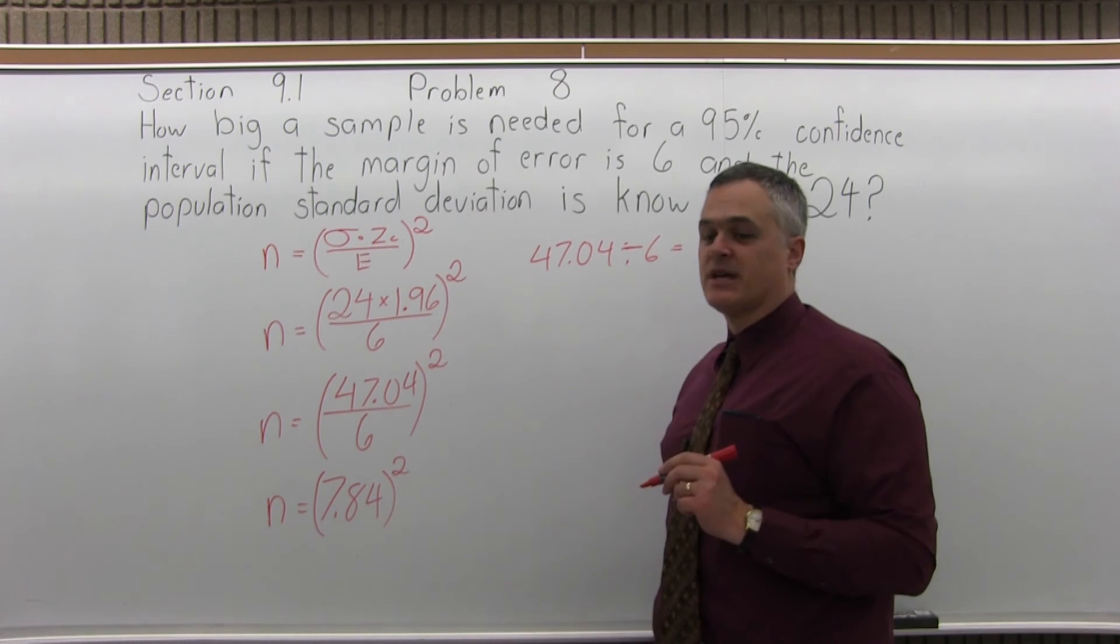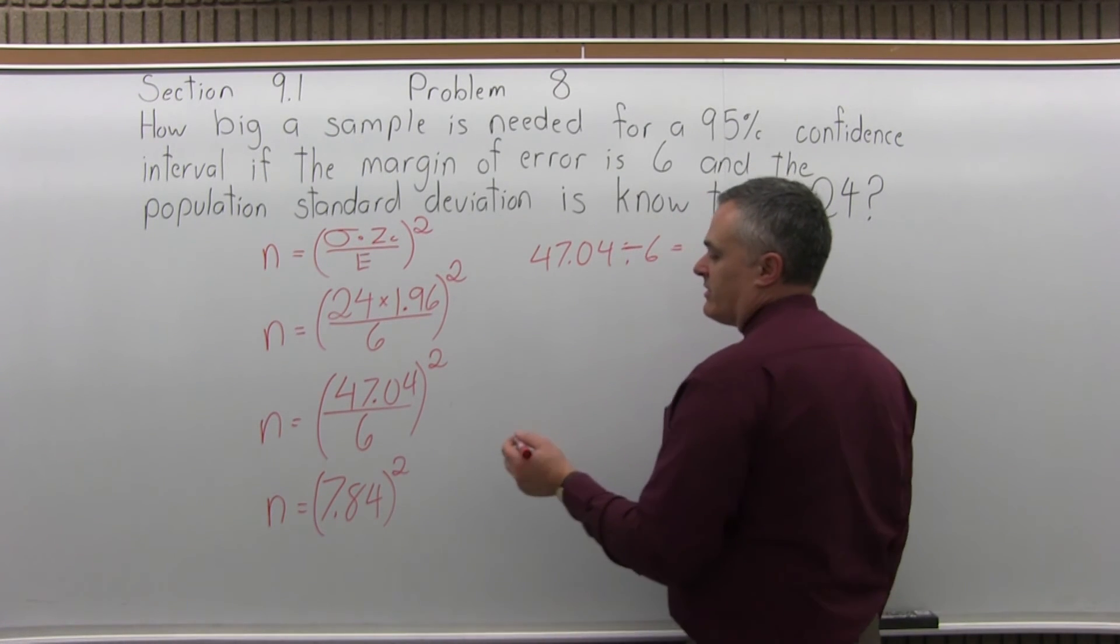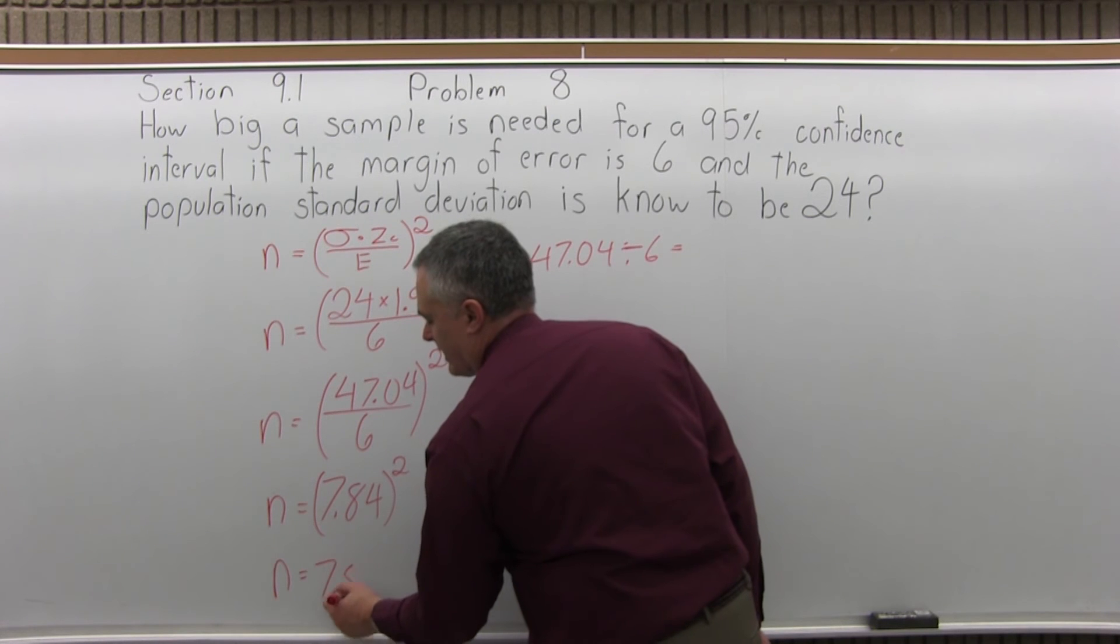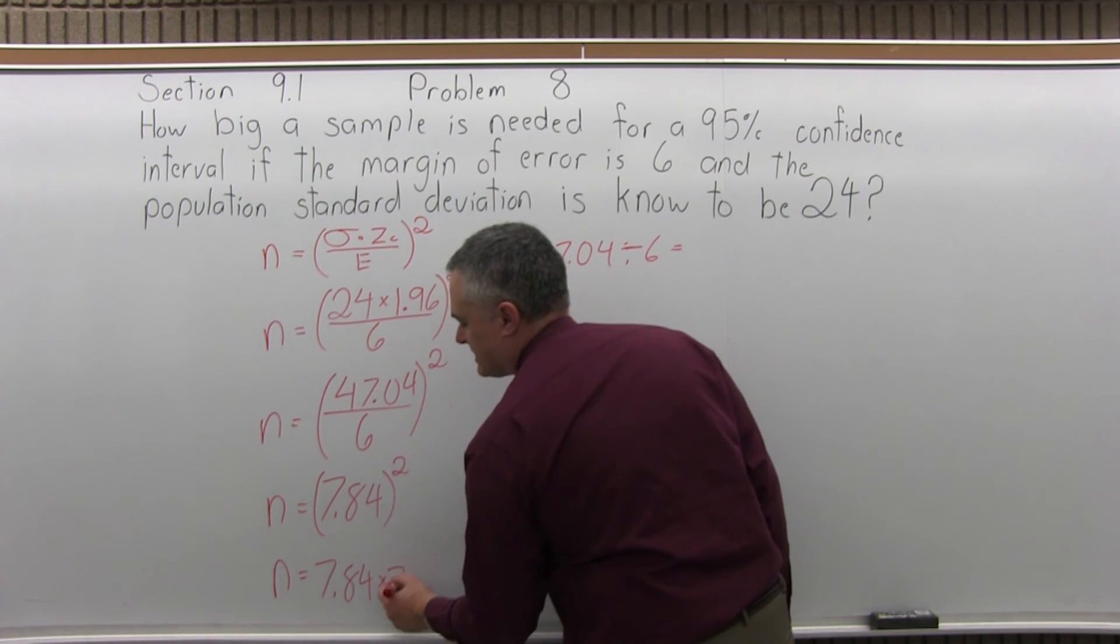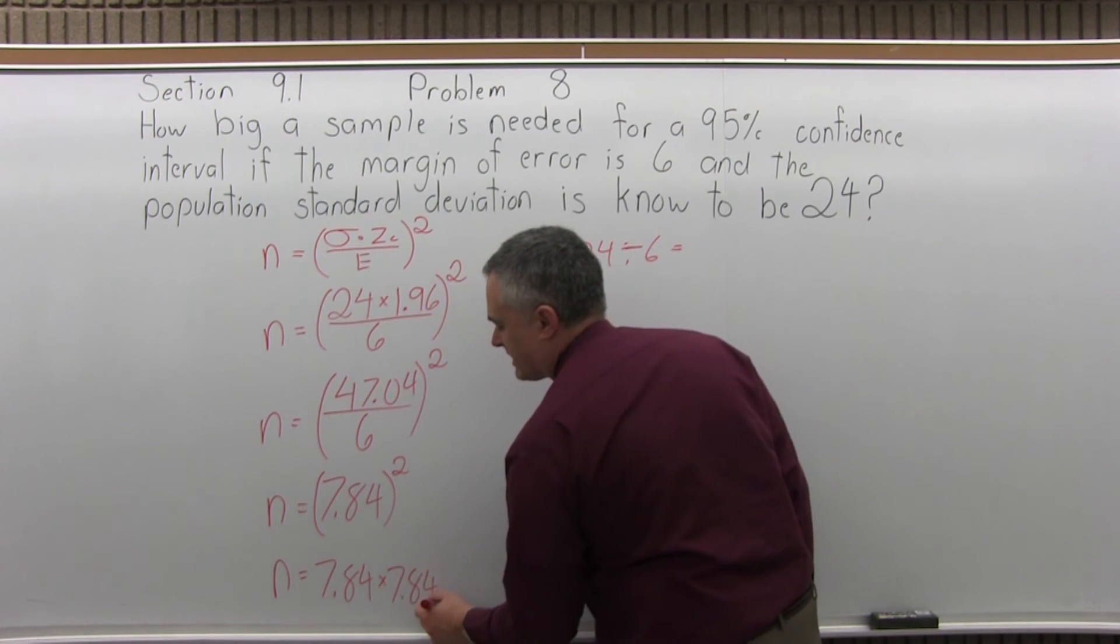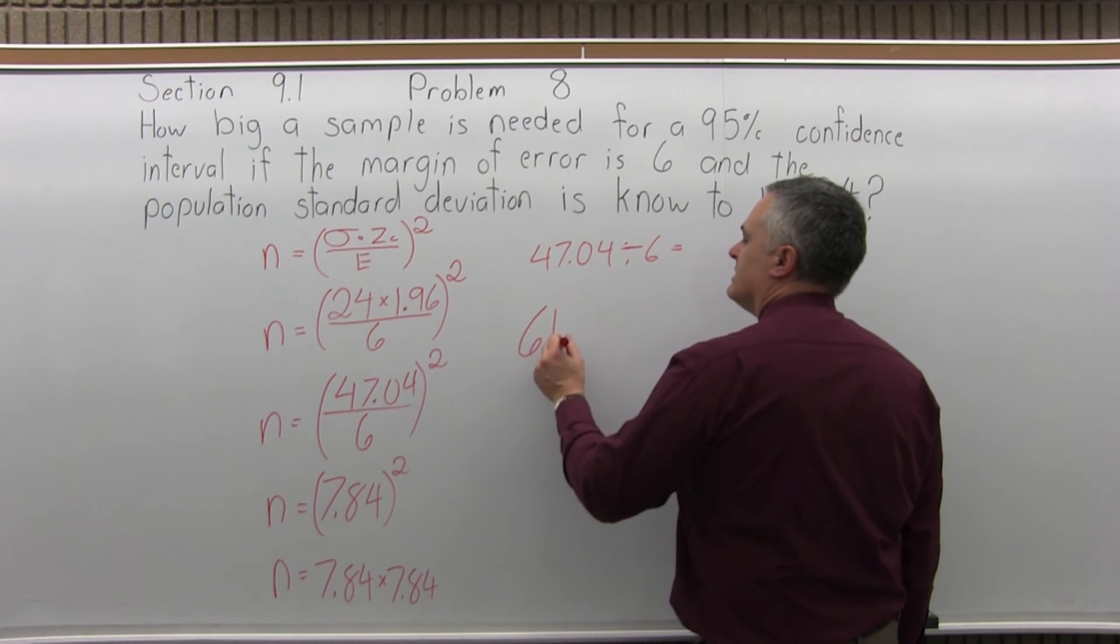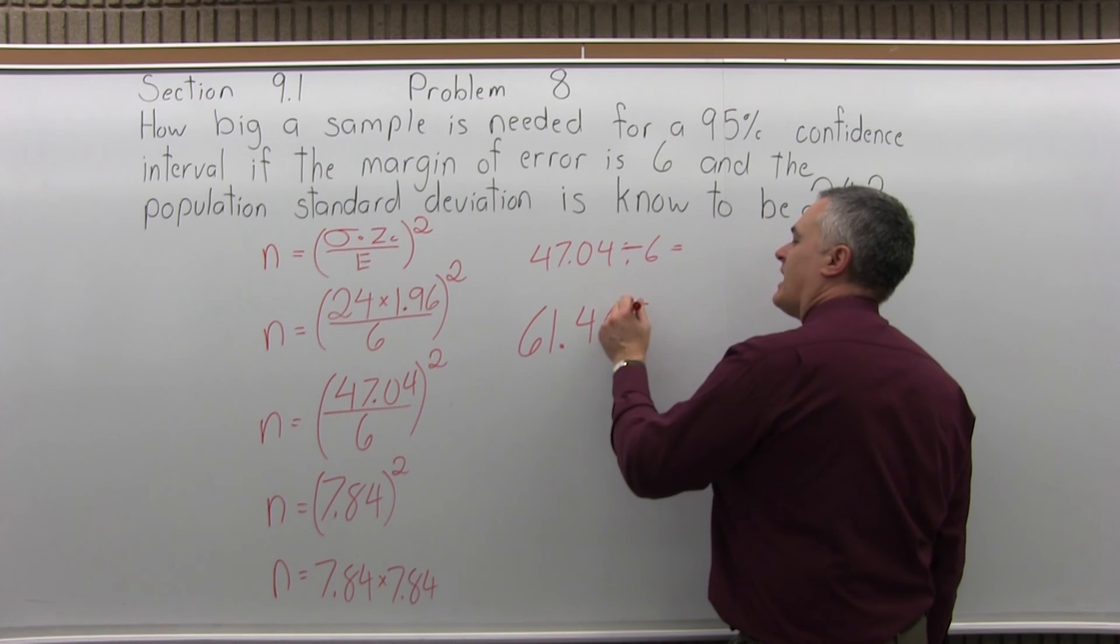Second power, again, don't forget the second power. So now with your calculator, you can do n equals 7.84 times 7.84. That's what we mean by second power. And the calculator will tell you, you get 61.4656.